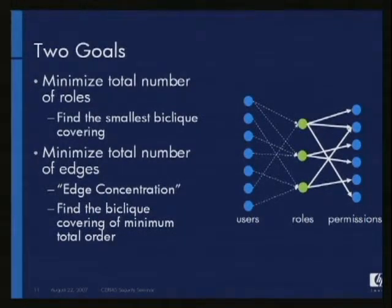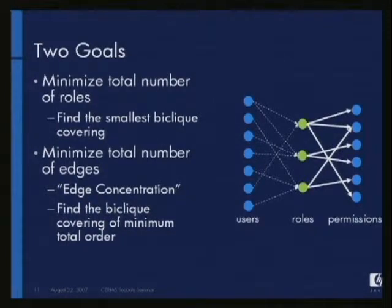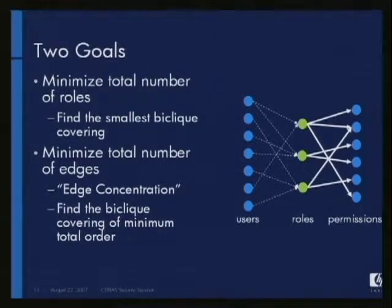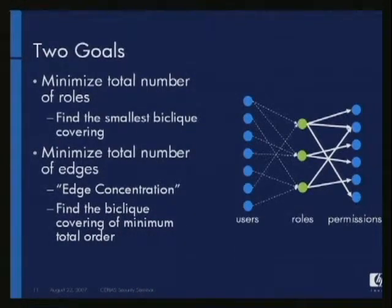We want to frame this as an optimization problem. There are two obvious optimization problems to consider. The first is to minimize the number of roles — find the smallest biclique cover of the bipartite graph. People want to find the minimum number of roles to explain their environment. The second, which is a little less intuitive, is to find the smallest number of edges in the resulting tripartite graph. In some sense, you're trying to minimize the amount of stuff you have to manage — the assignment of roles to permissions and users to roles — when minimizing the number of edges.